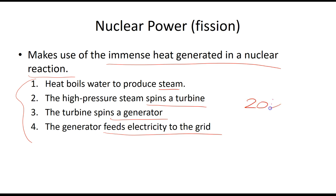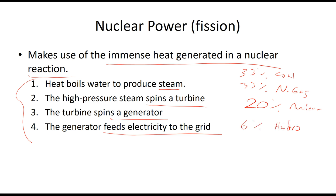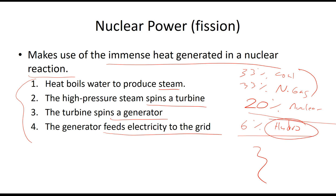In the U.S., about 20 percent of power comes from nuclear. About 33 percent comes from coal, about 33 percent from natural gas, about 6 percent from hydro, and everything else — solar, wind — makes up the rest. The vast majority is coal and natural gas; nuclear is number three. Around here in the Pacific Northwest, most electricity is produced by hydropower.